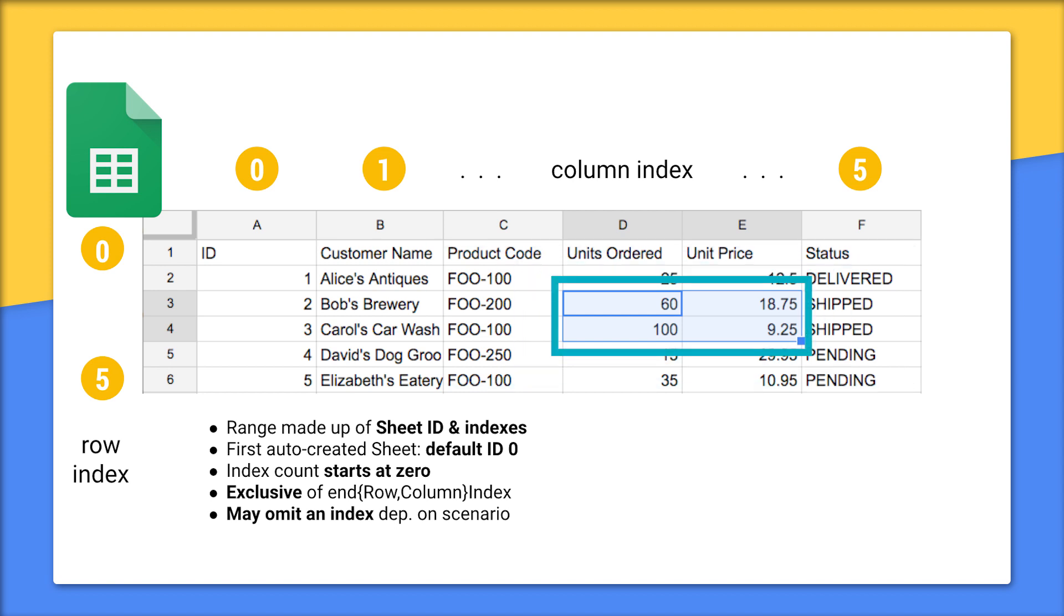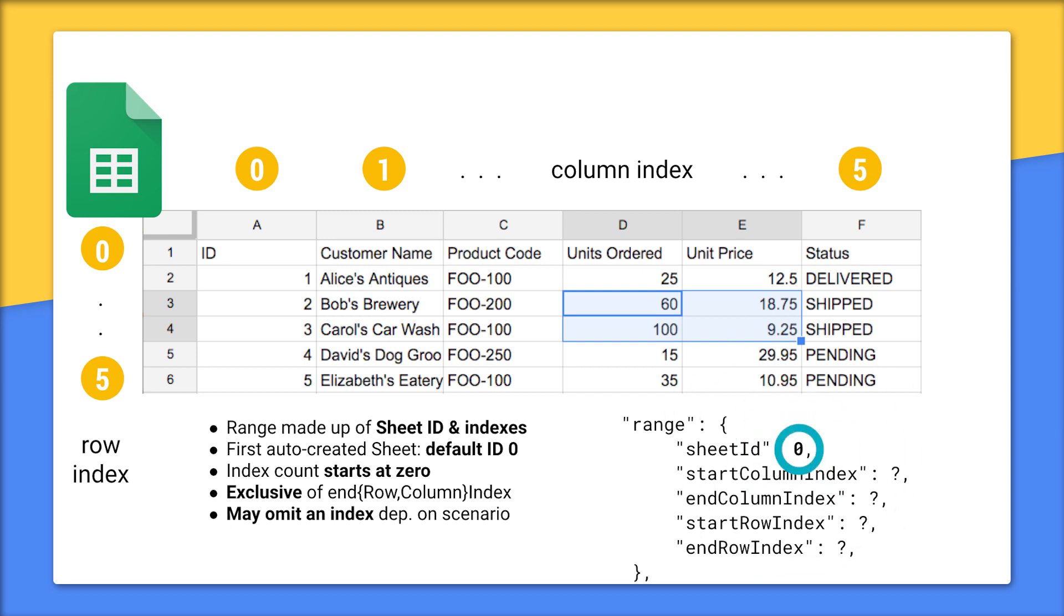Time for a quiz. See the blue highlighted range in the sheet? Now, this range JSON object you see here? Well, what should we fill in for each value? We'll start with the sheet ID. Assuming this is the default sheet, that's right. The ID is 0. In fact, if you know you're accessing this default sheet, you can leave out the sheet ID completely. The range starts at column D, which is at index 0, 1, 2, 3.